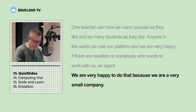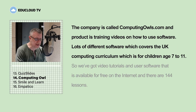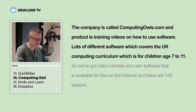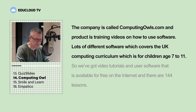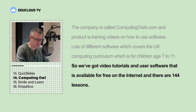The company is called Computing Owls — computingowls.com — and the product is training videos on how to use software. It covers lots of different software which covers the UK computing curriculum for children aged 7 to 11. We've got video tutorials using software available for free on the internet, and there are 144 lessons.